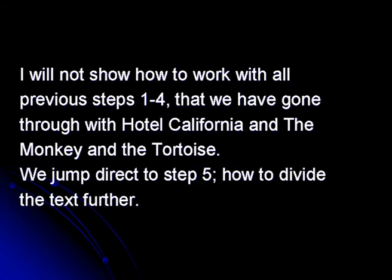We are jumping directly to step five — how to divide the text further. The four steps before that were about discussing who, when, where; you open up the text and then start to close it again by deciding a theme. You create an action protocol, a police protocol, a fable, and your personal reading. So my personal reading is: we need life lies to survive. And the theme is, of course, life lies.